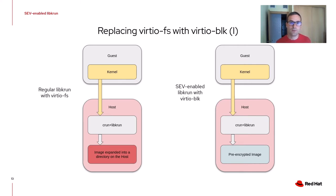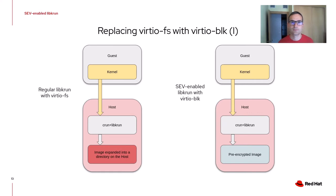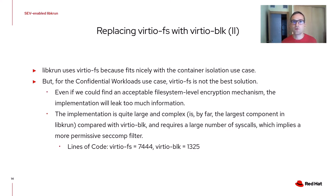Another change we needed to implement was replacing virtio-fs with virtio-block. The regular version of libkrun uses virtio-fs as its unique host-device, allowing us to use any directory on the host as the root filesystem for the guest. The SEV-enabled version uses virtio-block with a pre-encrypted image on the host as the storage backend. The reason is that while virtio-fs fits very nicely with the regular container isolation use case — following the same workflow as a regular container: download an OCI image, expand it to a directory, and use that directory as the root filesystem — we felt it was not the best solution for a confidential workload use case.